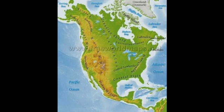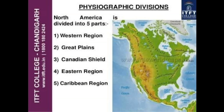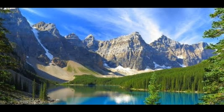Physical features: North America can be divided into four major physical regions: the Western Cordillera, the Central Lowlands, the Eastern Highlands, and the Canadian Shield. The Western Cordillera is a series of young fold mountains that run parallel to each other all along the western coast of North America. As they resemble twisted ropes or cords, the ranges are known as cordilleras, meaning ropes or cords in Spanish.